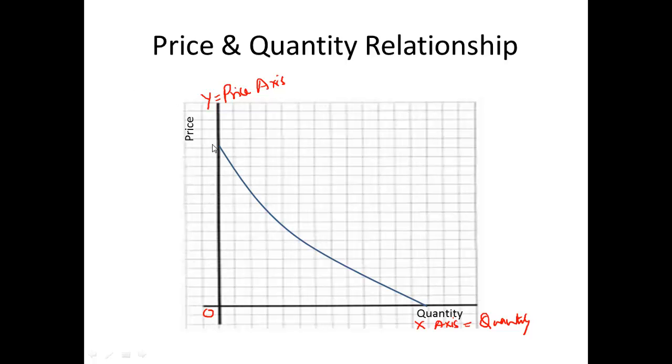Now the curve, let us say A, B, C, D—the curve ABCD gives the relationship between price and quantity demanded.